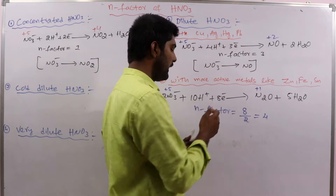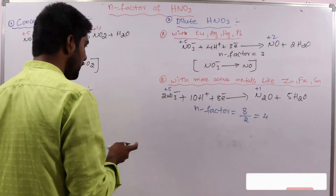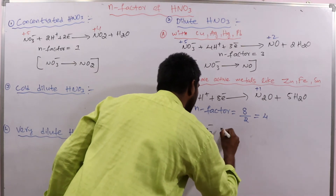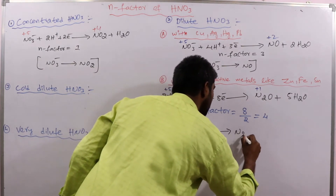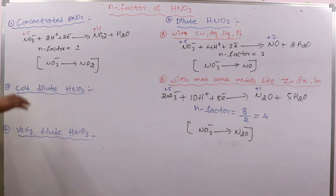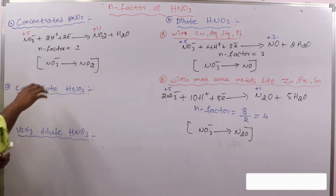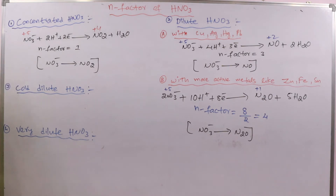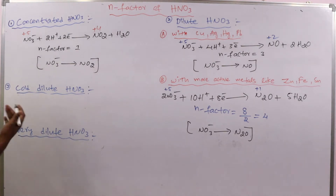Overall, NO3⁻ is converted to N2O. So to summarize so far: concentrated HNO3 gives N-factor 1; dilute HNO3 with less reactive metals gives N-factor 3; with active metals like zinc, iron, tin, N-factor equals 4.